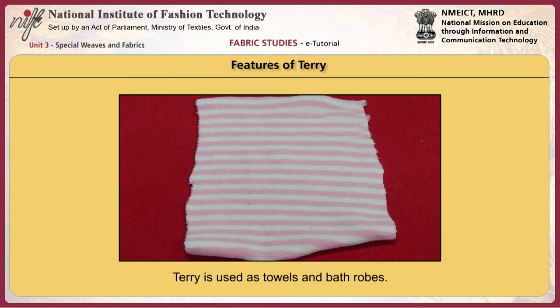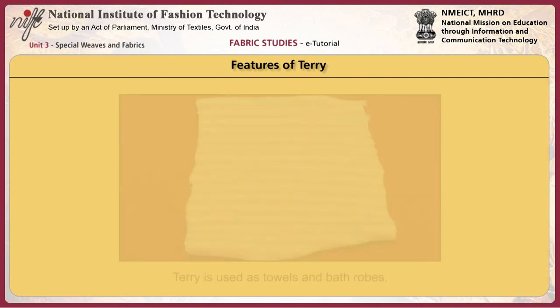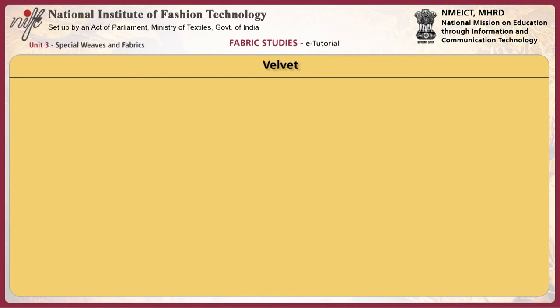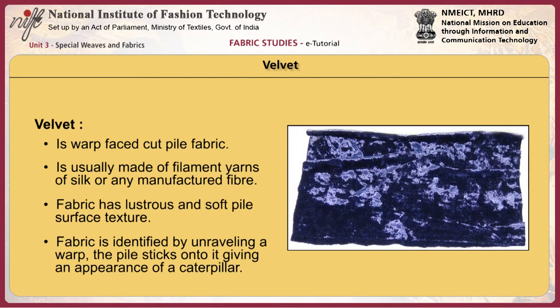Terry cloth is widely used as towels and bathrobes. Velvet is a warp face cut pile fabric, usually made of filament yarns of silk or any manufactured fiber. It has a luscious and soft pile surface texture. Velvet is identified by unraveling a warp — the pile sticks onto it and gives it the appearance of a caterpillar.